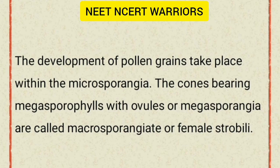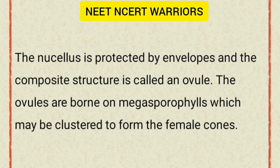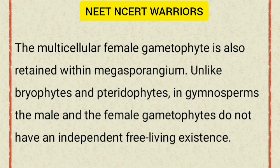The cones bearing megasporophylls with ovules or megasporangia are called macrosporangiate or female strobili. The male or female cones or strobili may be borne on the same tree, e.g., Pinus. However, in Cycas, male cones and megasporophylls are borne on different trees. The megaspore mother cell is differentiated from one of the cells of the nucellus. The nucellus is protected by envelopes and the composite structure is called an ovule. The ovules are borne on megasporophylls which may be clustered to form the female cones. The megaspore mother cell divides meiotically to form four megaspores. One of the megaspores enclosed within the megasporangium develops into a multicellular female gametophyte that bears two or more archegonia or female sex organs. The multicellular female gametophyte is also retained within the megasporangium.